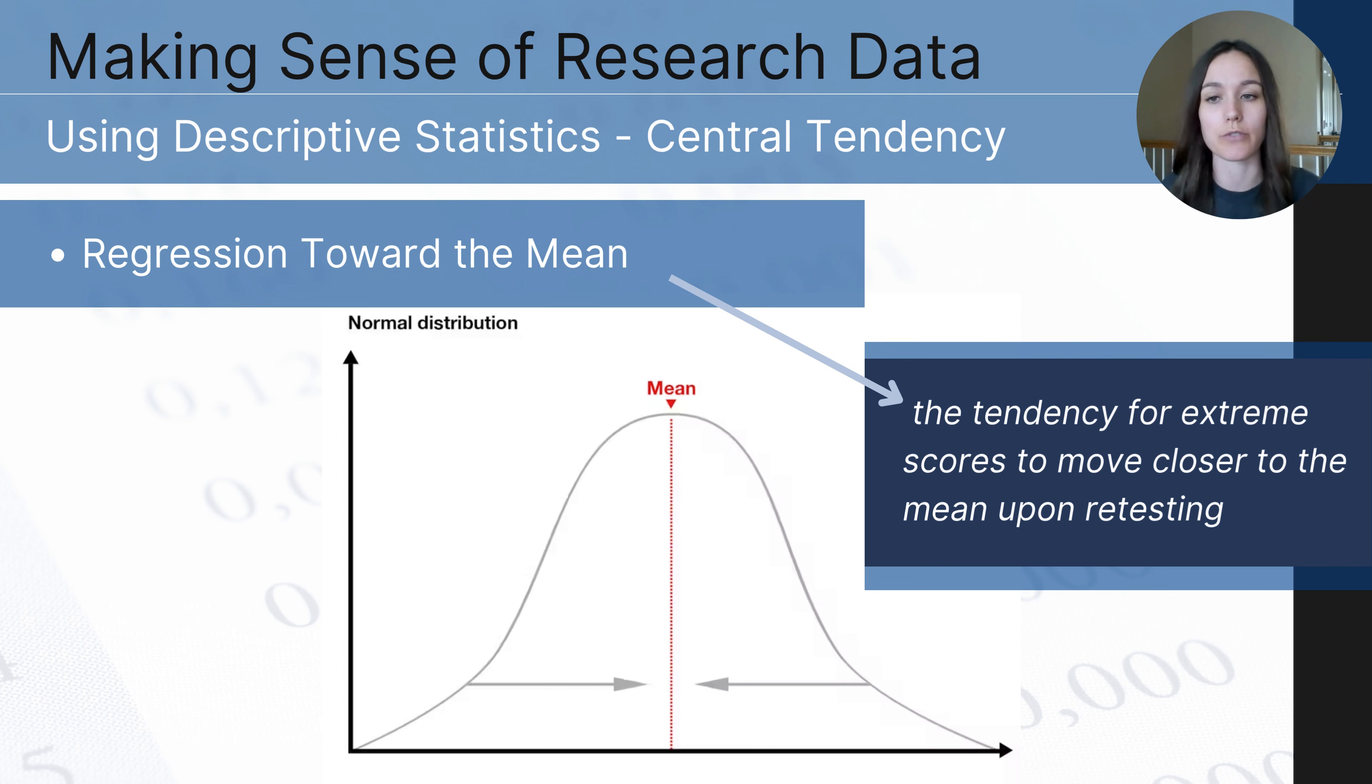And this is just a phenomenon that we refer to as regression toward the mean when extreme scores, if tested again and again, start to revert closer to the mean.